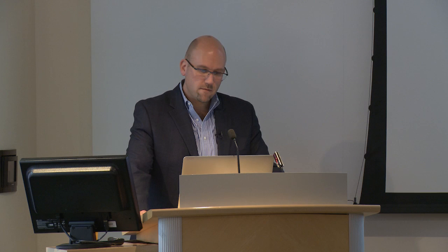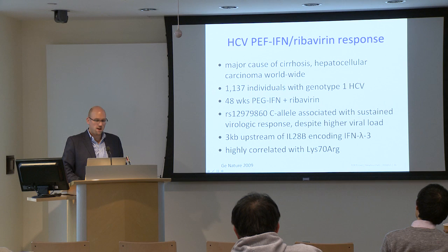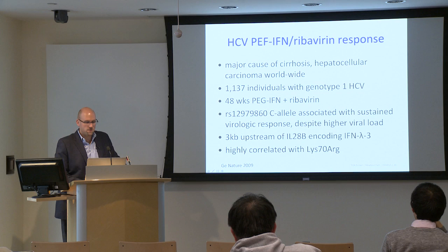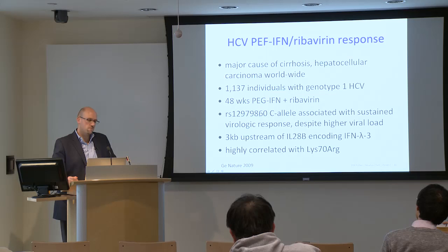Another example is a therapy for Hepatitis C. Hepatitis C worldwide is quite common — estimates of seroprevalence are on the order of 1 to 2 percent of the general population — and it's a major cause of cirrhosis and hepatocellular carcinoma worldwide. A study of pegylated interferon and ribavirin, a somewhat toxic 48-week drug regimen, was focused on the most common genotype of the Hepatitis C virus. A genome-wide association study identified a single polymorphism associated with sustained virologic response despite having a baseline higher viral load — so individuals with this genotype had a greater burden of Hepatitis C but also enjoyed a greater benefit from this targeted therapy.